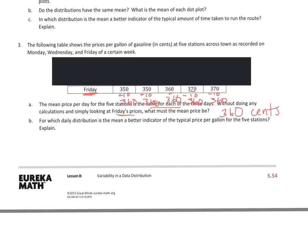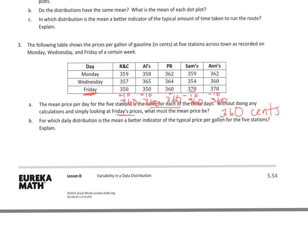For which daily distribution is the mean a better indicator of the typical price per gallon for the five stations? So what I'm going to do right now is I'm going to get rid of that because I've got to look at all of this, and I know that my mean is 360. So when we say which is a better indicator, we're trying to find one that has the least amount of variability, meaning the least amount of spread between the numbers. So when we look at this, we're looking at daily distribution.